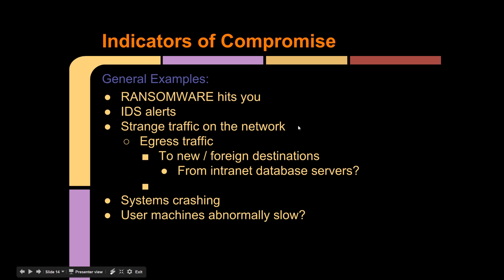Here are some examples. Ransomware hits you — it's very obvious. IDS alerts go off like crazy. There's a lot of strange traffic on the network, especially egress traffic to new foreign destinations, which is especially concerning if the source IP is your intranet database servers. You have systems crashing all over the place. Another common situation is user machines being abnormally slow, which may not be an indicator of compromise — it may be an indicator of a bad patch from your OS vendor, Microsoft or Apple, causing everything to slow down.